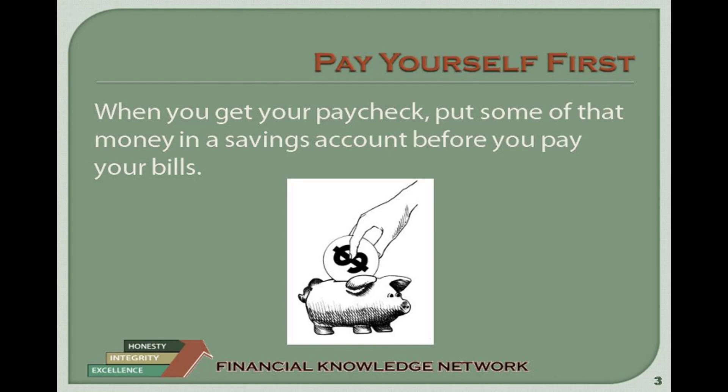Tip 2: Use direct deposit or automatic transfer to savings to create additional savings. When you get paid, put a portion in savings through direct deposit or automatic transfer. If you have a checking account, you may sign up to have money moved into your savings account every month. What you don't see, you don't miss. You may also purchase U.S. savings bonds through payroll deduction.